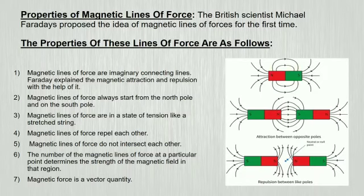Faraday explained magnetic attraction and repulsion with the help of it. Magnetic lines of force always start from the north pole and end on the south pole. Magnetic lines of force are in a state of tension like a stressed string.